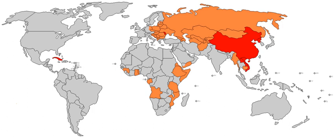An economic system is a system of production, resource allocation and distribution of goods and services within a society or a given geographic area. It includes the combination of the various institutions, agencies, entities, decision-making processes and patterns of consumption that comprise the economic structure of a given community. As such, an economic system is a type of social system.